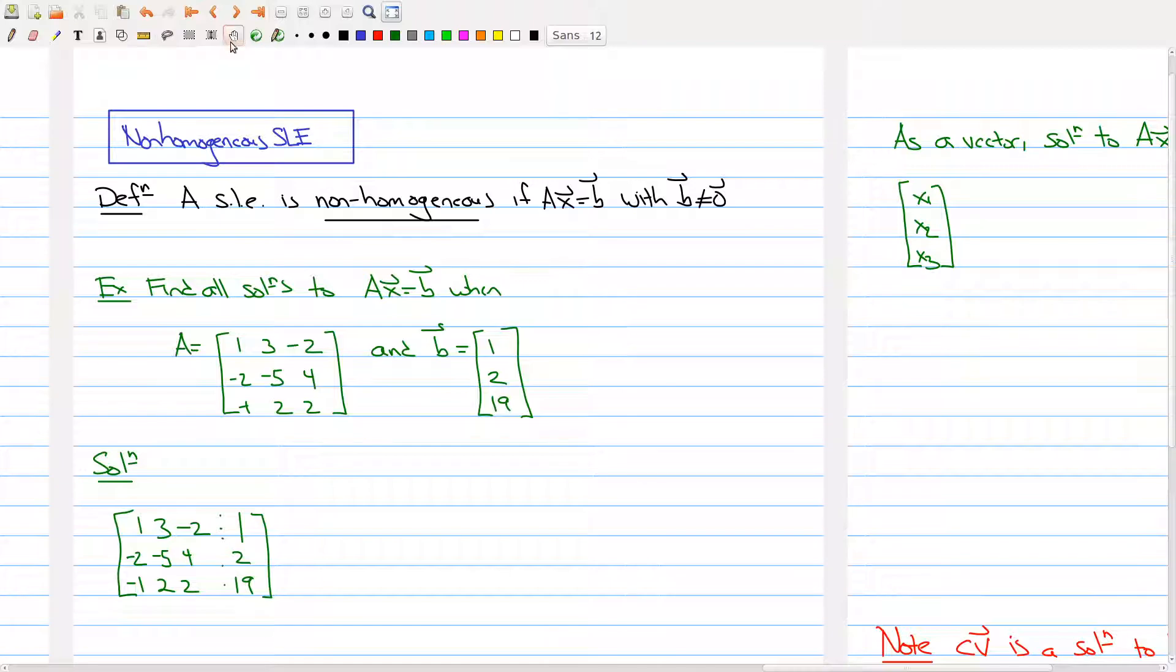As you can expect from the name, a system of linear equations is non-homogeneous if the matrix equation looks like Ax equals B, where B is not equal to zero. The difference between homogeneous and non-homogeneous is what the matrix equation is equal to.